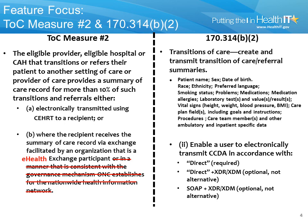For instance, an EHR technology would not meet this certification criterion if it were only tested to the SOAP plus XDR-XDM transport standards. To state this another way, whatever EHR technology is presented for certification must demonstrate compliance with both paragraphs I and II under B2 — to create a CCDA and to be able to transmit it — to meet the certification criterion. This also means that there is no transport-only certification as part of 2014 edition certification. As illustrated by the arrows, Paragraph A of Measure 2 is supported by the specific transport capabilities expressed in paragraph II of the certification criterion.